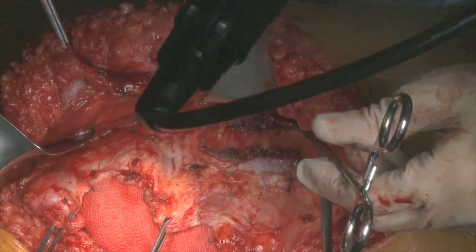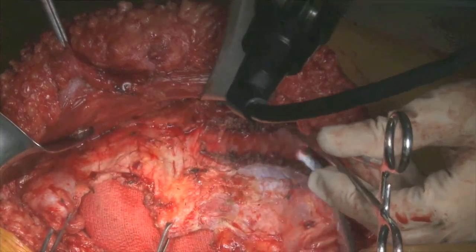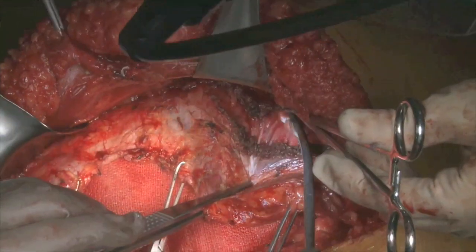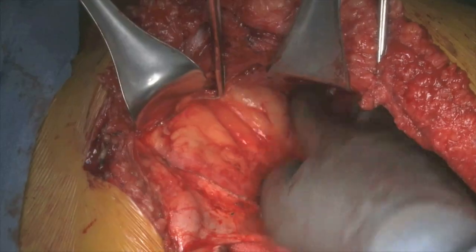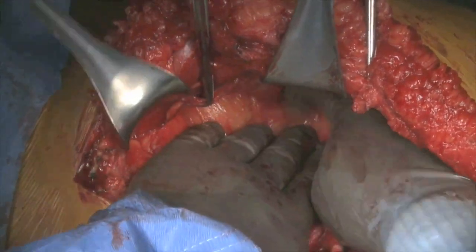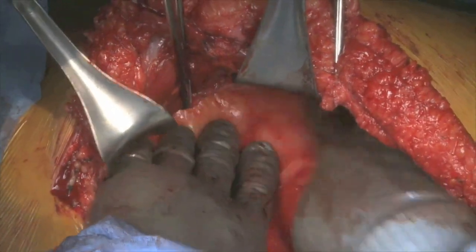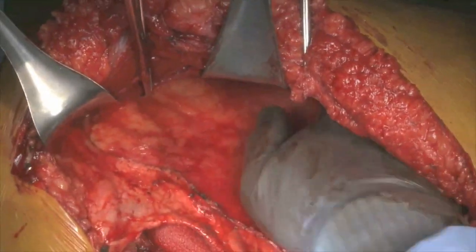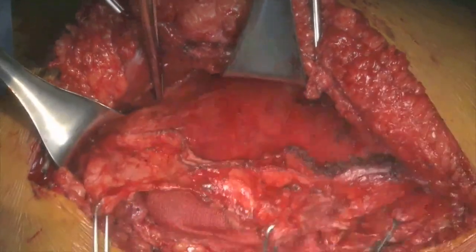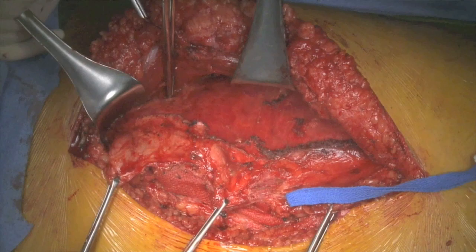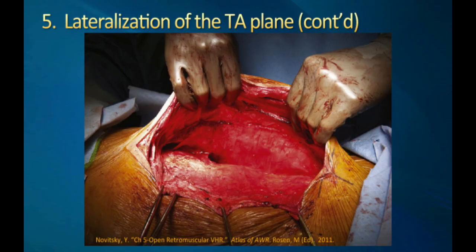To start the lateralization of this plane, typically use peanuts or kittners and gently sweep that muscle off and out laterally. Key important parts of this are to ensure that you try and keep the transversalis fascia down with the peritoneum. After elevating the muscle off the transversalis fascia, get your hands back there and do some gentle finger flicking and massaging of that plane, which can break up this avascular plane relatively easily and carry that dissection all the way out laterally until you reach the retroperitoneal fat.